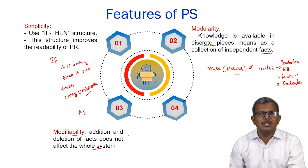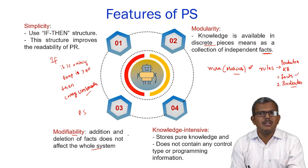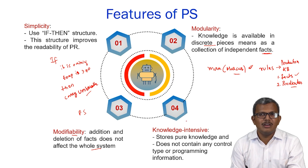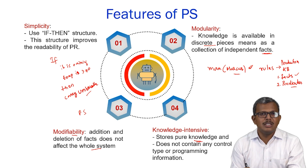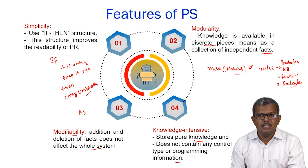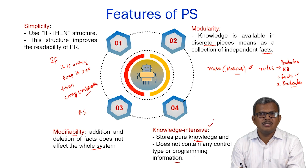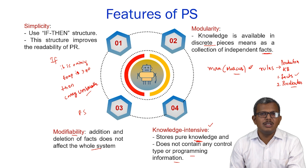The third feature is modifiability — you can add or remove rules from the knowledge base, and even adding or deleting rules does not reflect on the performance of the whole system. The fourth feature is knowledge intensive — the knowledge base concentrates only on storage of knowledge itself, not on programming descriptions. These are the four important features: simplicity, modularity, modifiability, and knowledge intensive.